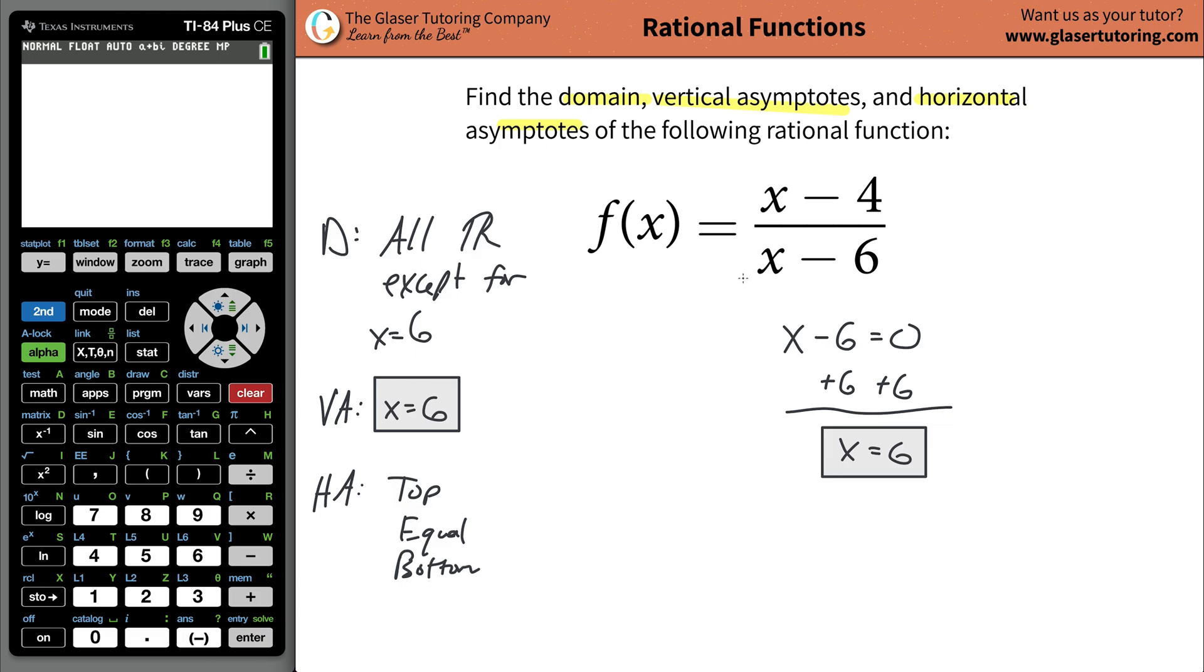You're going to take the coefficient of the highest power of x in your numerator, which in this case is a one. And then you're also going to take that highest power of x's coefficient in the denominator, which is one. And you're going to take the numerator's coefficient and divide it by the denominator's coefficient. So what's one divided by one? Obviously just one. And that is now the value of the horizontal asymptote. Now remember, horizontal asymptotes are horizontal lines, so it's always going to be y is equaling a number, so y is equal to one. That is indeed the horizontal asymptote. So all you have to do is divide the coefficient of the highest x power in the numerator by the coefficient of the highest x value in the denominator.